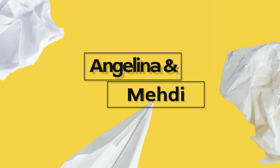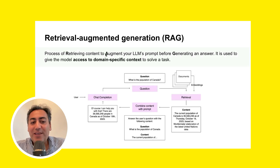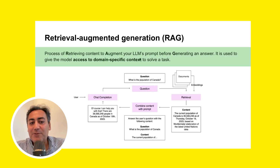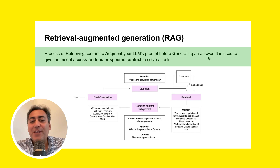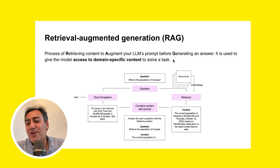We will tackle the big question: how good is good enough for production? RAG is a process of retrieving content to augment the LLM before generating an answer. In other words, we are giving very specific, domain-specific context to the LLM to solve a task. That's called RAG.